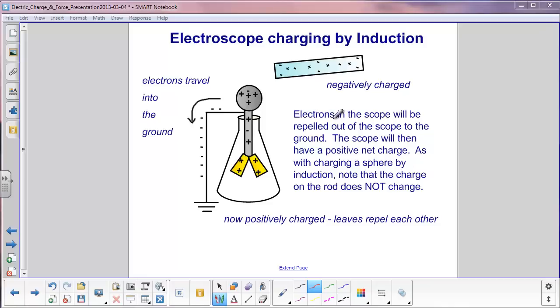Electrons in the scope will be repelled out of the scope down to the ground, thus leaving a net positive charge on the electroscope, so the gold leaves now have positive charges and they will repel each other.